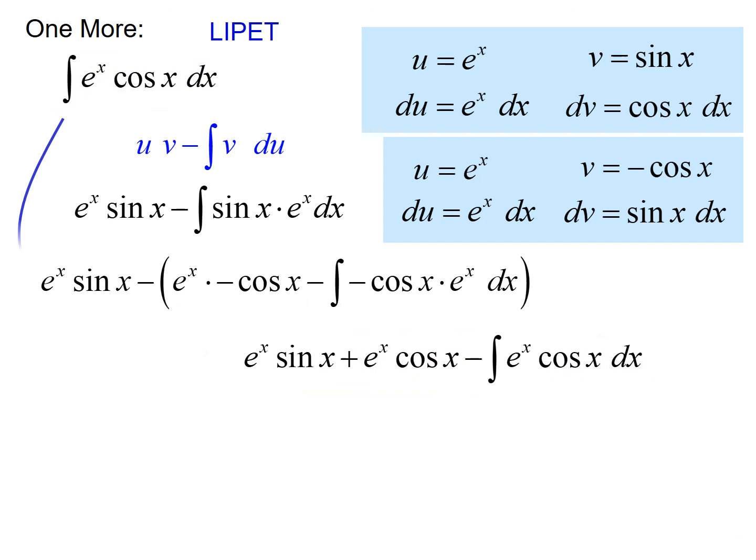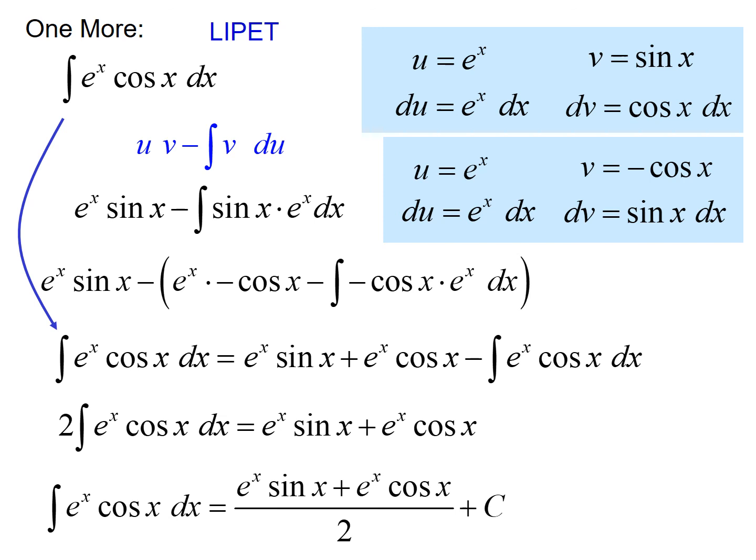If we actually write this out showing where we started and where we're at, we can rearrange. We can add the integral of e to the x cosine of x dx over to the left hand side. And since we have two of them, it's just two times the integral of e to the x cosine of x. And then we can divide by two. And we've found that the integral of e to the x cosine of x dx equals e to the x sine x plus e to the x cosine of x divided by two plus c.